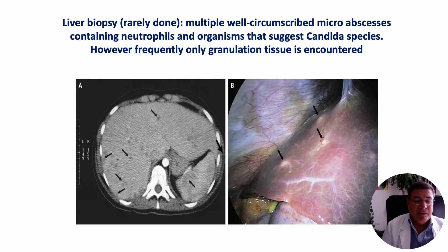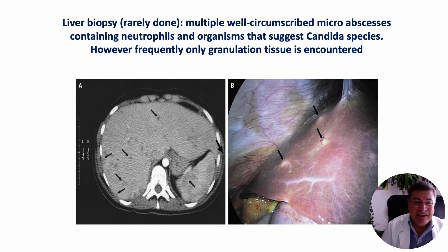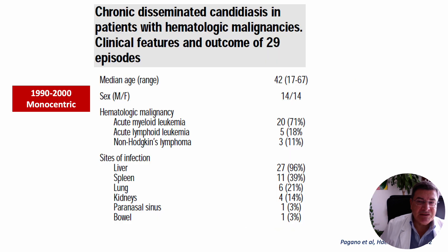The use of histopathological help is not always easy because usually we can perform it only when the patient recovers from neutropenia, and it is difficult to observe fungi in the lesion. On the contrary, we can observe granulation tissue that can support a suspicion but not a correct diagnosis of fungal infection.